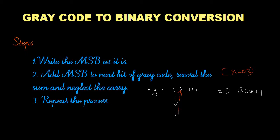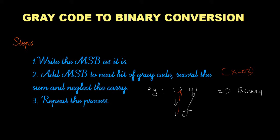So I am XORing 1 and 1. One XOR one is zero. Next step, I am XORing this zero with zero. Zero XOR zero is again zero. Then finally I am XORing this zero with one — zero XOR one is one. So the corresponding binary equivalent is 1 0 0 1.